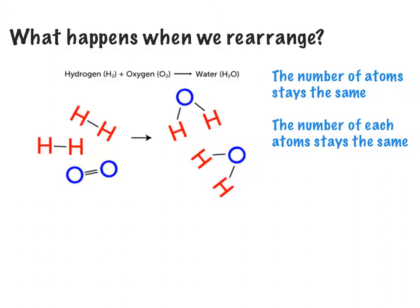Let's look at this example. I've got some hydrogen gas and I'm going to burn it in air, and we know it's going to make water vapor. Let's look at what happens. If I count the number of atoms on this side, I've got one, two, three, four hydrogen atoms. For oxygen I've got one, two.